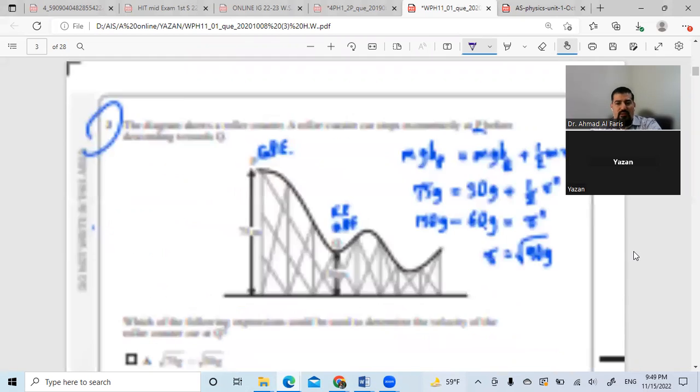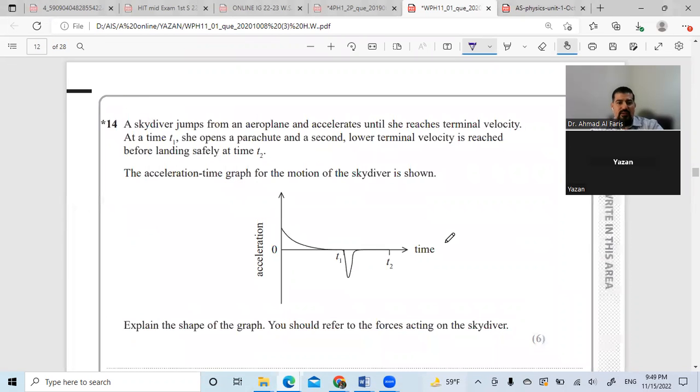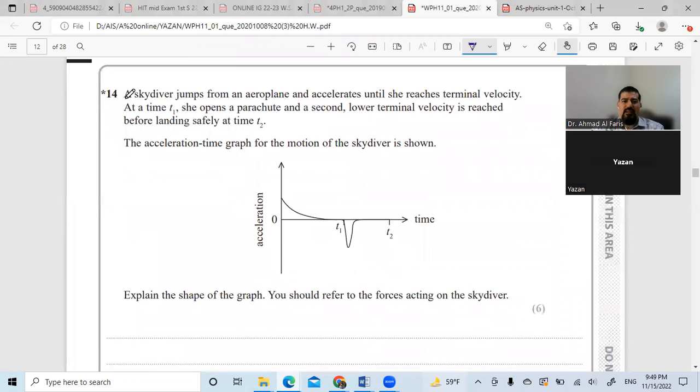And this question here, what do we have? We have a graph, acceleration time graph. And in this graph, they ask about a skydiver jumps from an airplane and accelerates until she reaches the terminal velocity at time t1. She opens the parachute and a second lower terminal velocity she reaches here. Before landing safely at t2 at this moment.